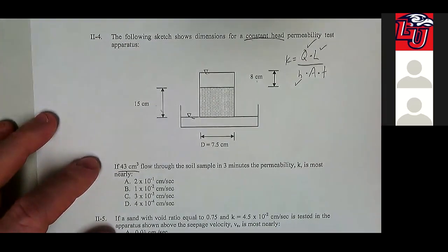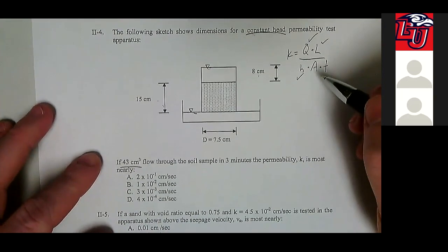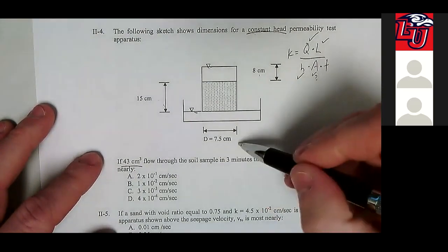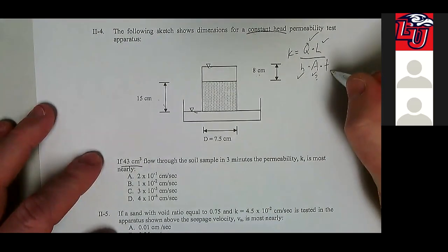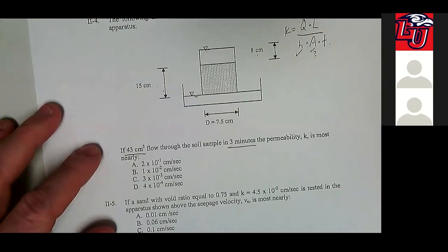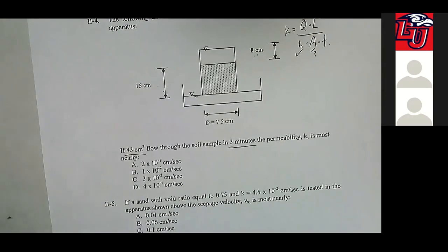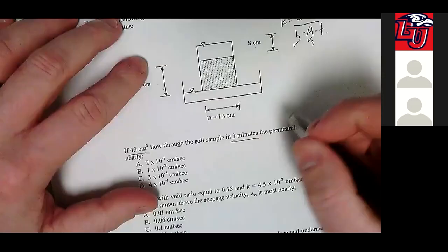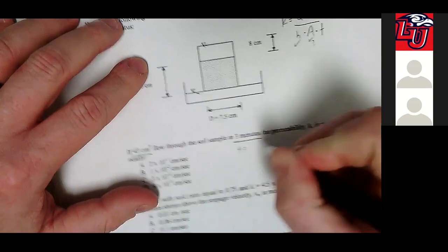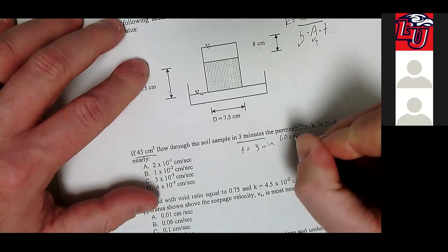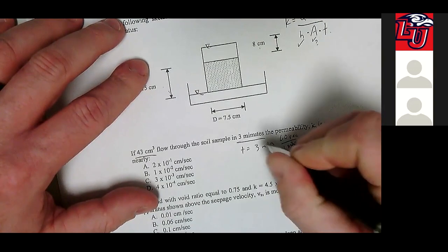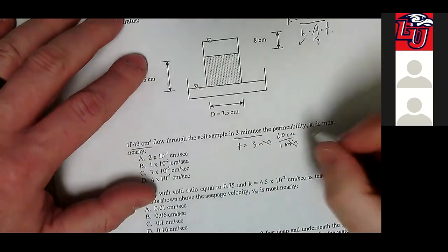A is the cross-sectional area of the soil sample — it was sort of given; we were given the diameter and had to calculate that. T is time, given as three minutes. Keep in mind it's asking us to solve in terms of seconds, but we can convert that. So T equals three minutes times 60 seconds per minute, which is 180 seconds.